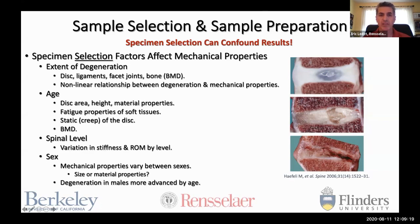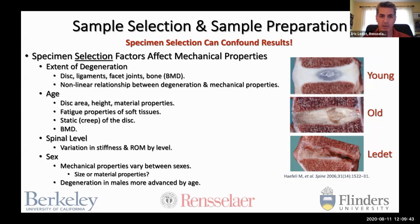For example, the disc during early stages of degeneration becomes less stiff and more compliant, but with advanced degeneration actually becomes stiffer. Ligaments exhibit similar properties, becoming hypertrophic and calcified with increasing degeneration. Age is also another factor that can significantly confound results, along with spinal level. Studies have shown that upper lumbar levels have very different properties than lower lumbar levels. Sex is also a factor, although it's unclear whether this is due to inherent size differences or actual material property differences between sexes. Degeneration in males advances more rapidly with age, giving us multiple confounding factors of age, sex, and size.